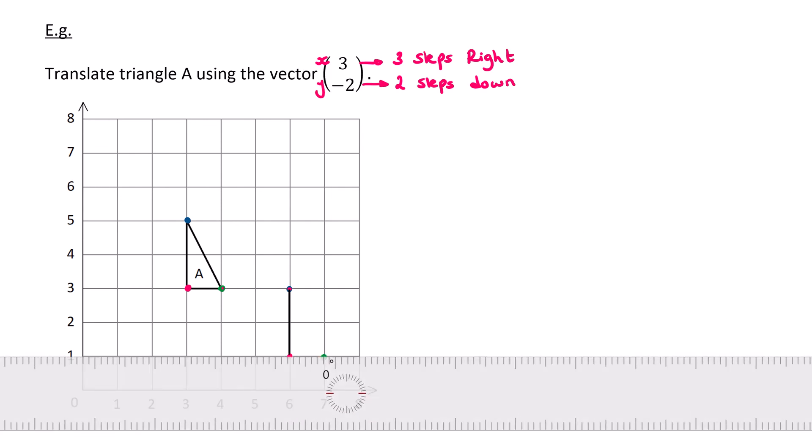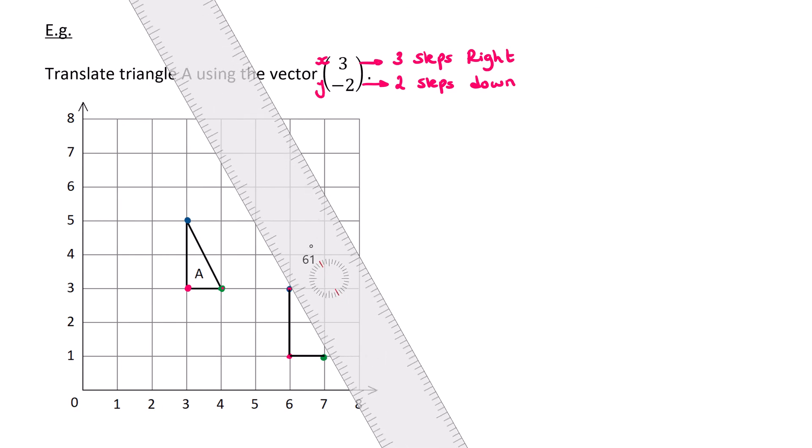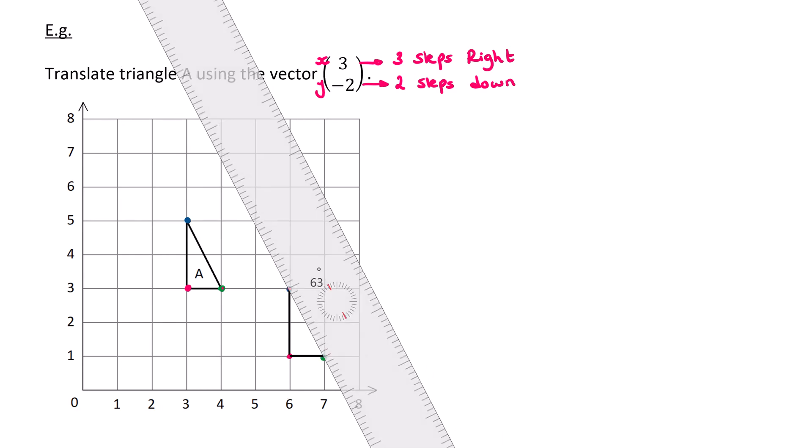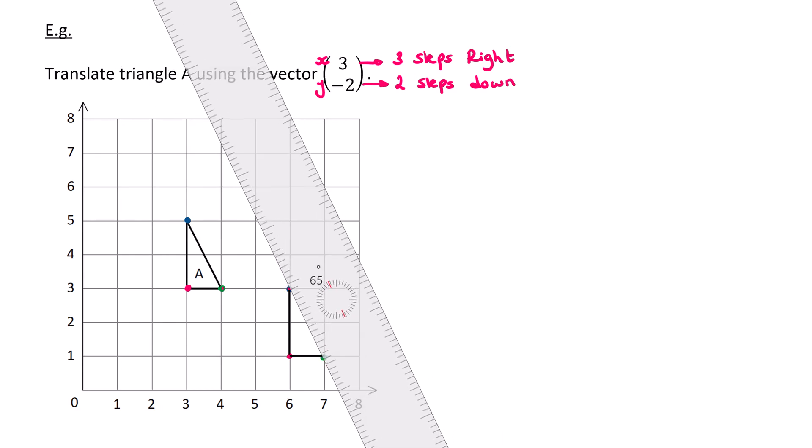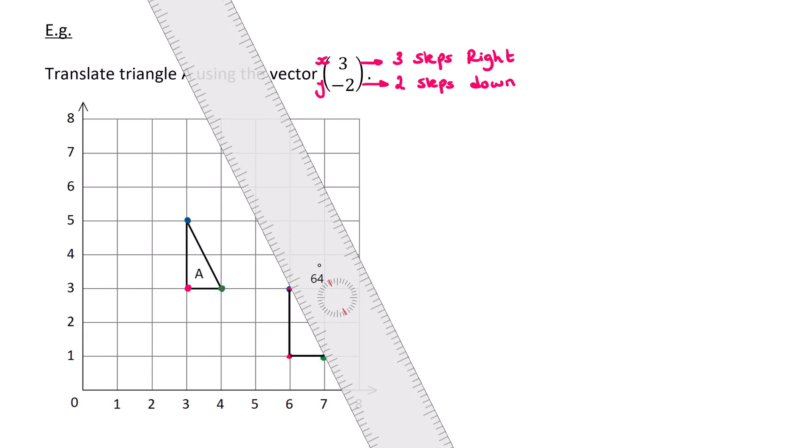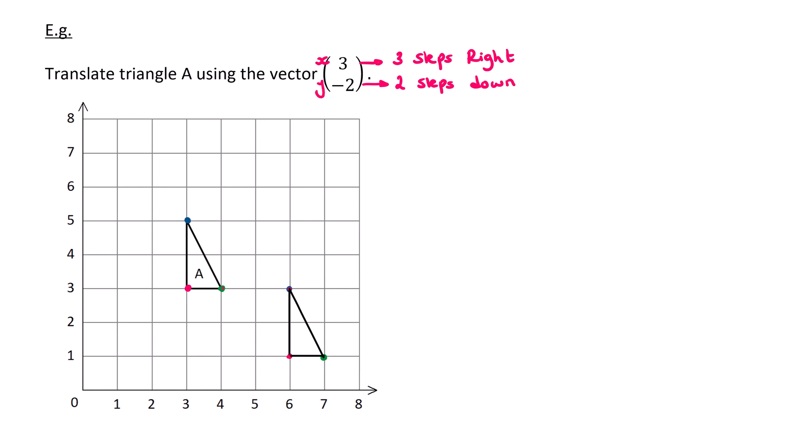And then you connect your shape to create the triangle. It would be best to have a very sharpened pencil to do this. And you definitely need a ruler. And read the question carefully because some questions will ask you to label the triangle. This one didn't, but it might ask you to label it and call it B for example.